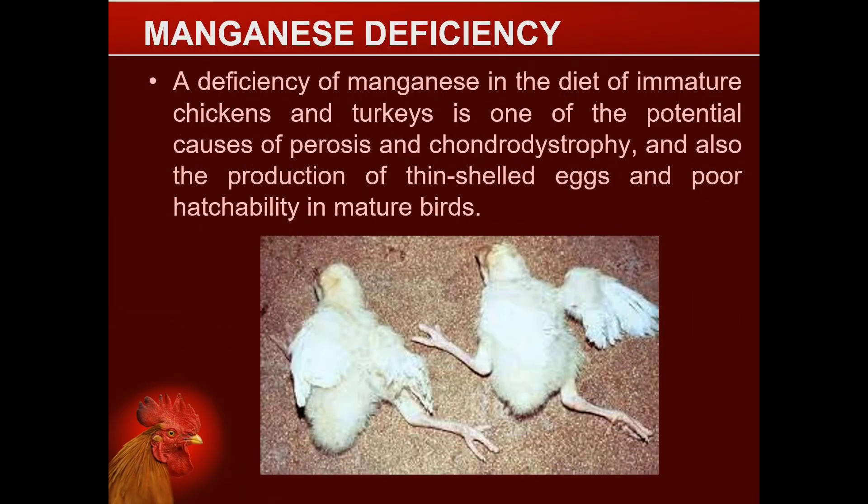Manganese deficiency is a deficiency of manganese in the diet of immature chickens and turkeys, and is one of the potential causes of perosis and chondrodystrophy. It also causes the production of thin-shelled eggs and poor hatchability in mature birds.